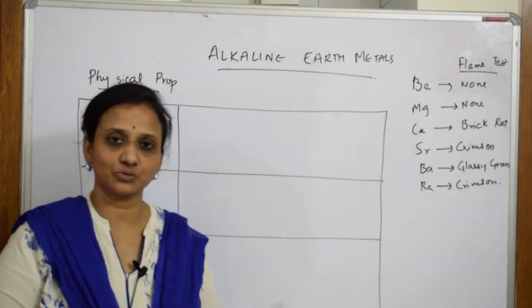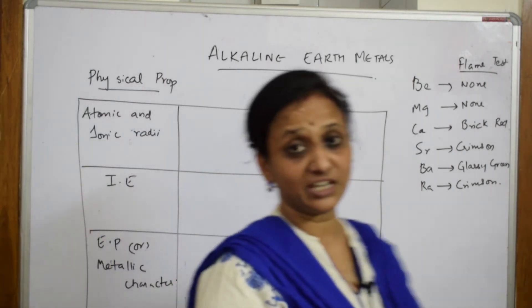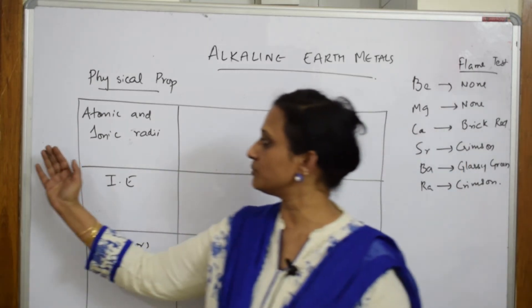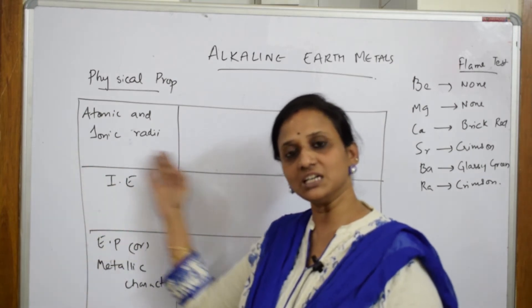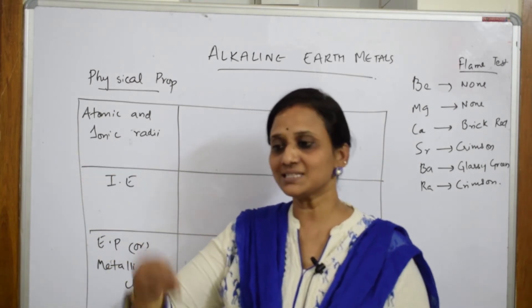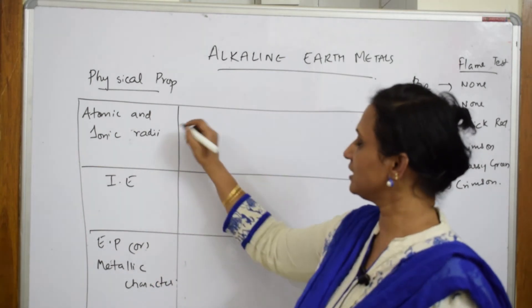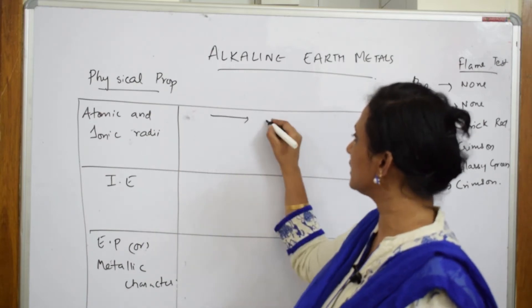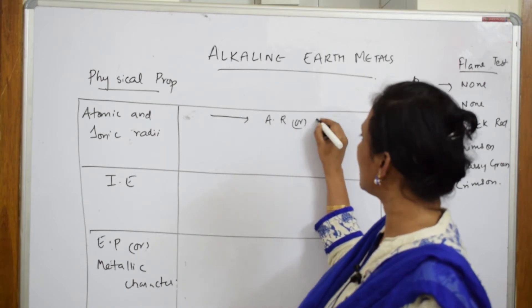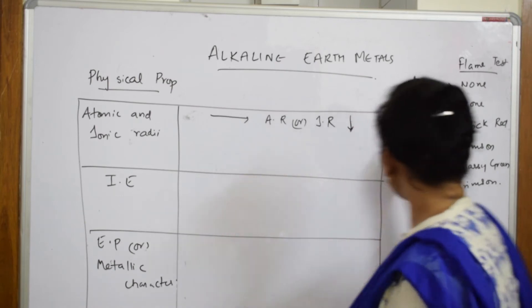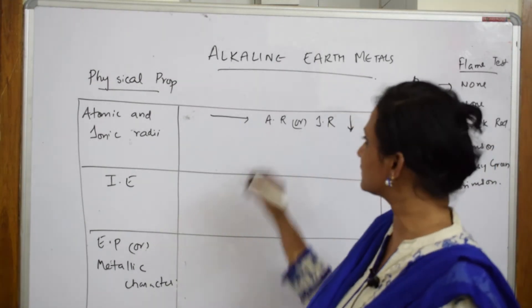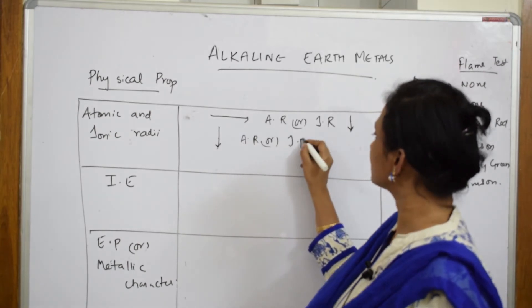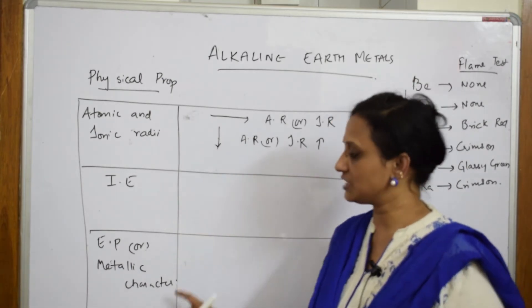For the physical properties, the first important thing is atomic and ionic radii. When moving from s-block alkali metals to alkaline earth metals — that is, from left to right in a period — electrons add to the same shell, so atomic radii decrease compared to alkali metals. But when going down from top to bottom in a group, the number of shells increases, so atomic and ionic radii increase.